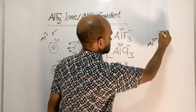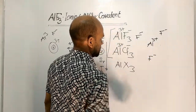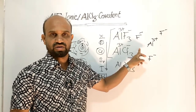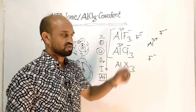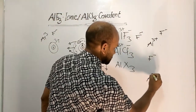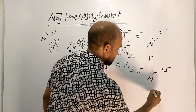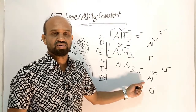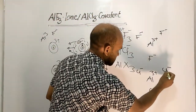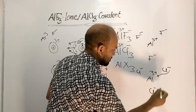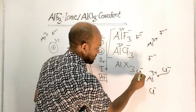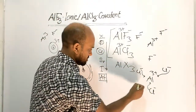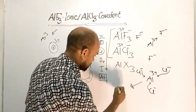In aluminium fluoride, aluminium 3+ surrounded by fluoride ions experiences almost no polarization, so aluminium fluoride remains an ionic compound. In aluminium chloride, the high degree of polarization causes the electron cloud to migrate to the middle between the aluminium 3+ and chloride ions, and as a consequence aluminium chloride turns into a covalent compound.